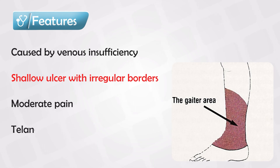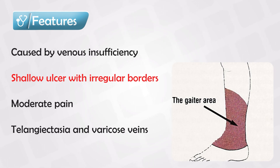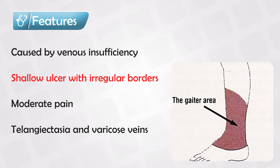Surrounding the ulcer, you might see telangiectasia, varicose veins — which are classic for chronic venous insufficiency — edema, stasis dermatitis, and other signs of venous insufficiency.